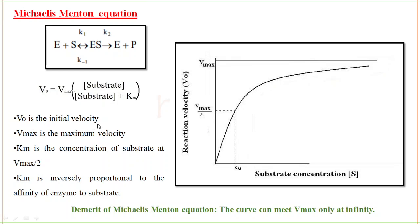V0 is the initial velocity with which the reaction is taking place. Vmax is the maximum velocity attained, after which you cannot increase the velocity — it is the saturated maximum. Km is the concentration of substrate at half Vmax. Km is inversely proportional to the affinity of the enzyme to the substrate. This is the Michaelis-Menten graph — x-axis is substrate concentration and y-axis is reaction velocity V0 — and it is a hyperbolic curve.